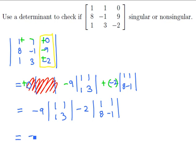So if we clean this up a little, we have minus 9, this would be 3 minus 1, subtract 2 times, we're going to have minus 1 minus 8.